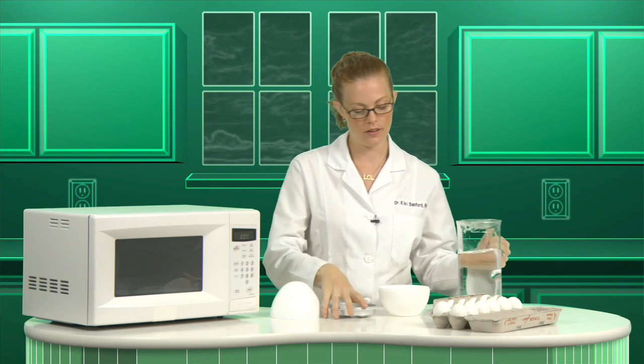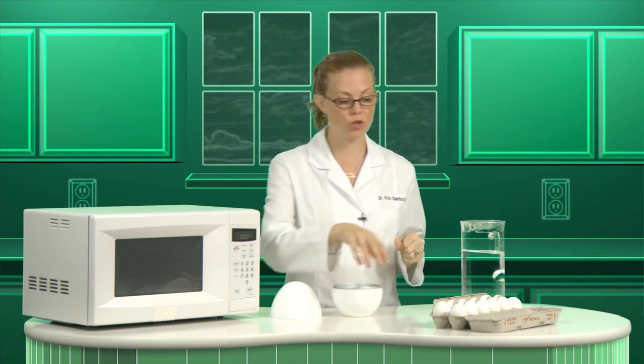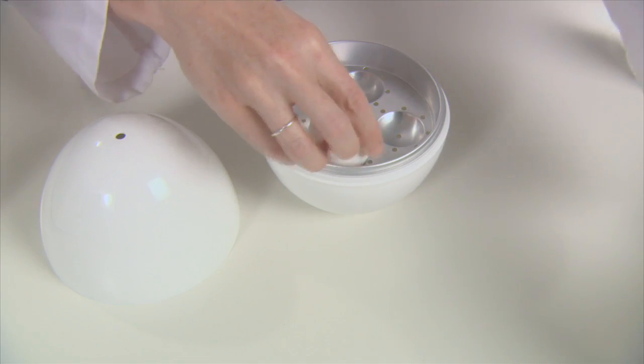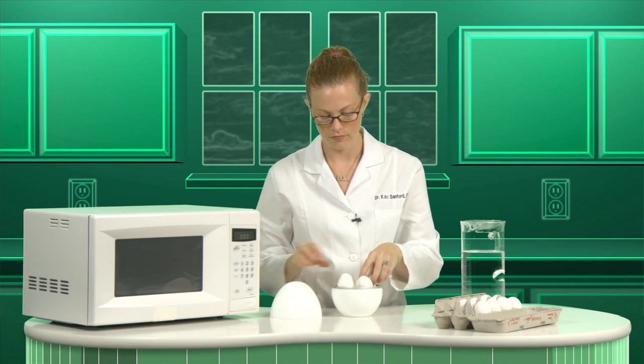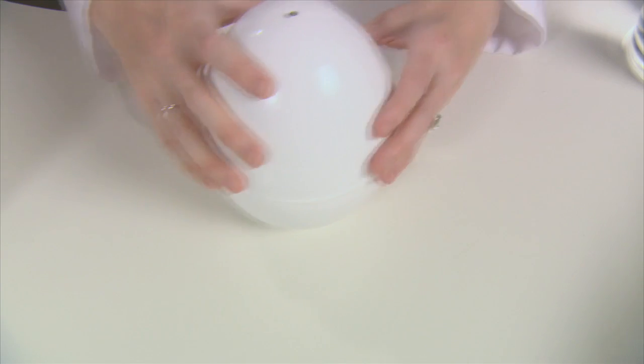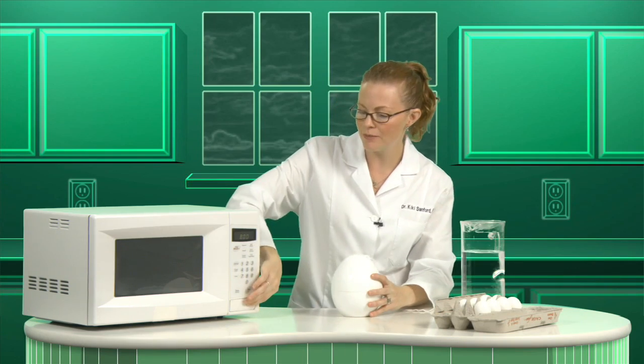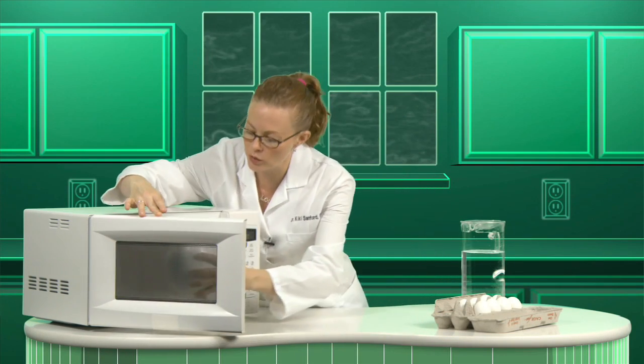You fill the well with water, put the eggs on the tray, set the lid on top, make sure it's snug, and then set the microwave to cook.